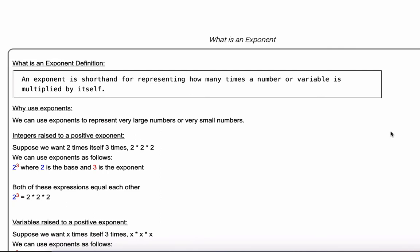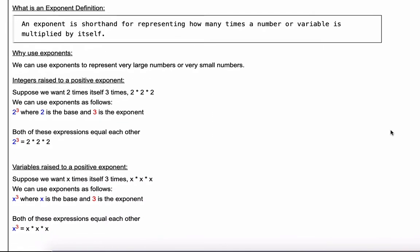Welcome to the 'What is an Exponent' video from MathCelebrity.com. In the next few minutes I'm going to walk you through what is an exponent, why you use them, and then the various exponent properties you can use with variables and numbers. An exponent is shorthand for representing how many times a number or a variable is multiplied by itself. If you're representing very large or very small numbers, it's an easier way to break down the number and read it.